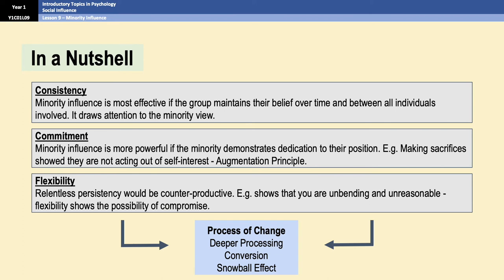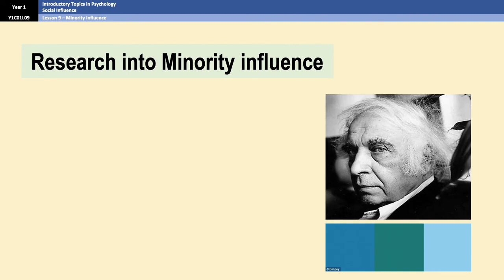To summarise: you've got your three processes that make for effective minorities — consistency, commitment, and flexibility. If used correctly, they can lead to the process of change, which involves deeper processing of the information, the process of conversion, and then the snowball effect, which ultimately leads to change on a wider scale. Before we finish off the outline, there's an important piece of research done by Moscovici into the importance of a consistent minority that you really should know for this topic.